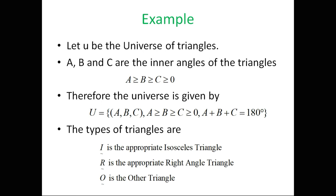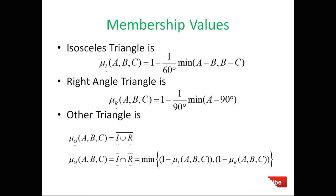The universe is defined as U = {(a,b,c) : a ≥ b ≥ c ≥ 0, a+b+c = 180°}, using the basic principle that all angles sum to 180°. We define three types: I for isosceles triangle, R for right-angle triangle, and O for other triangles. Given three angles a, b, c, we want to determine the membership value for each type.